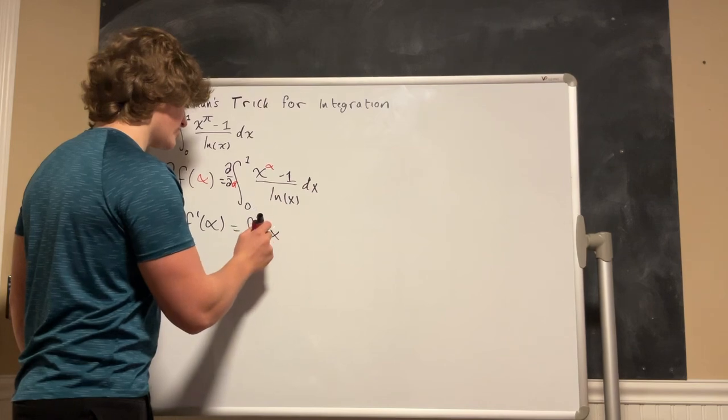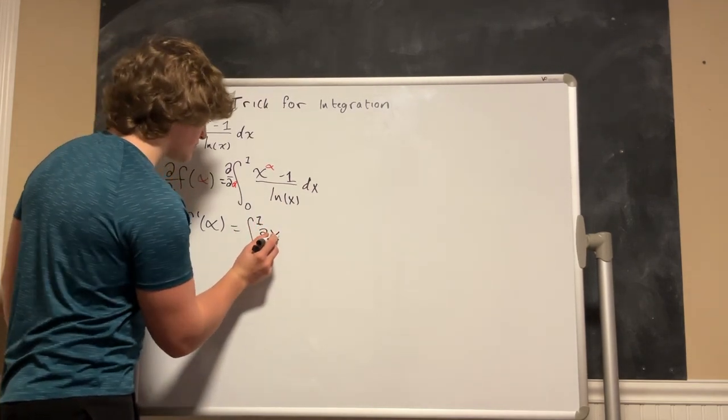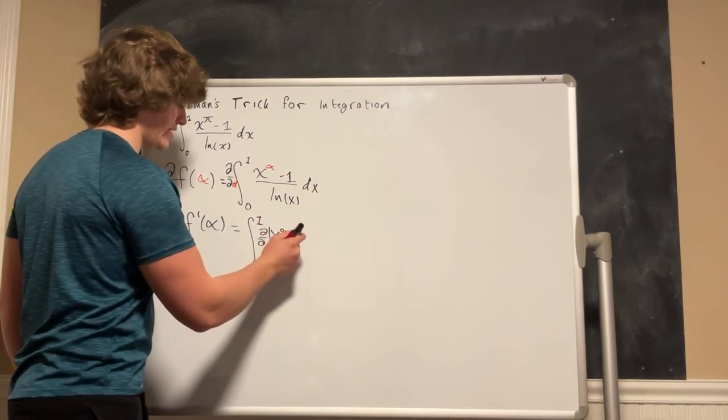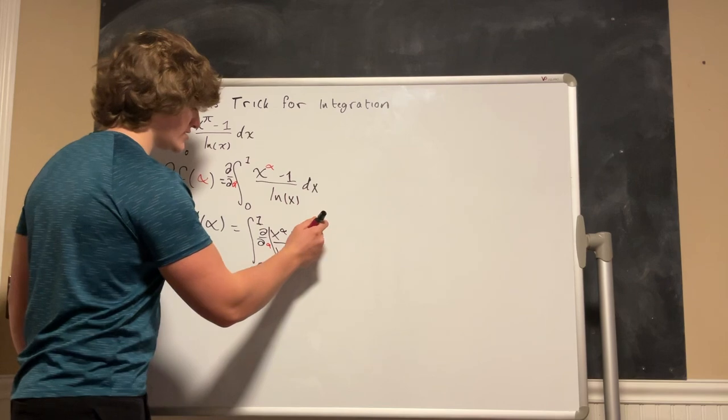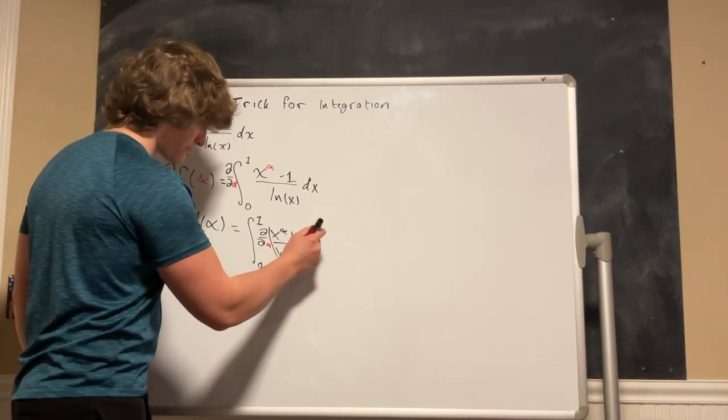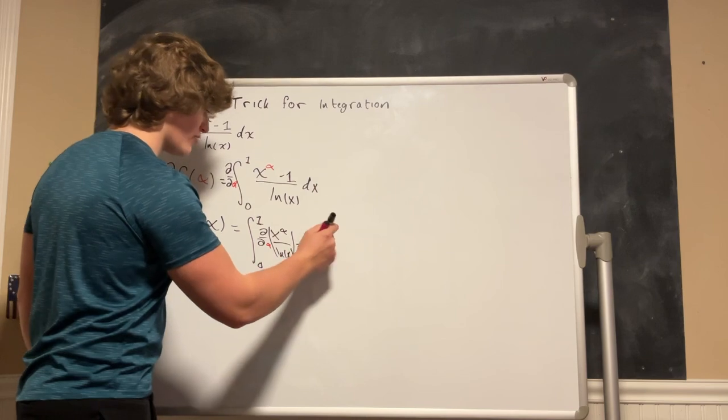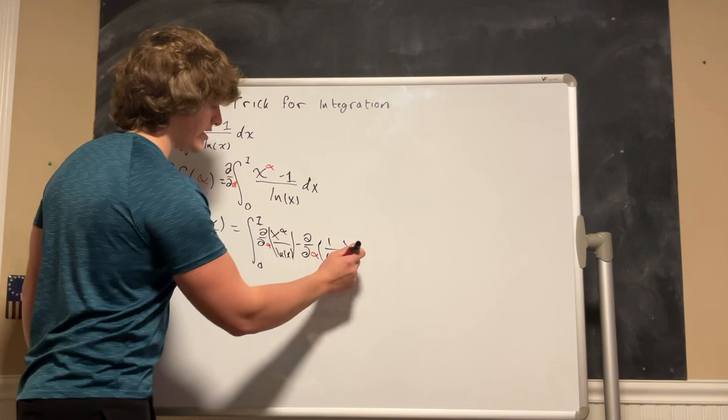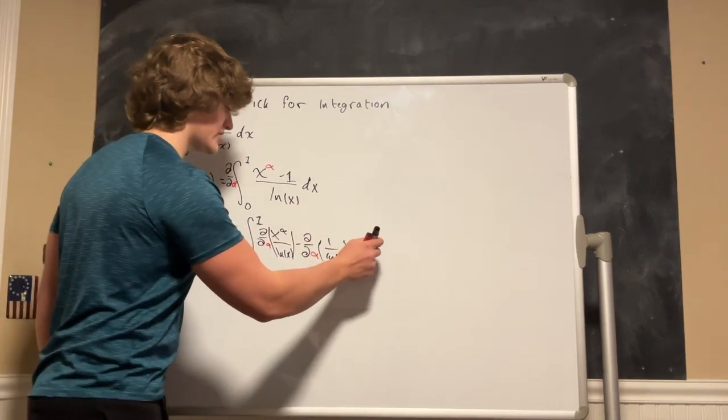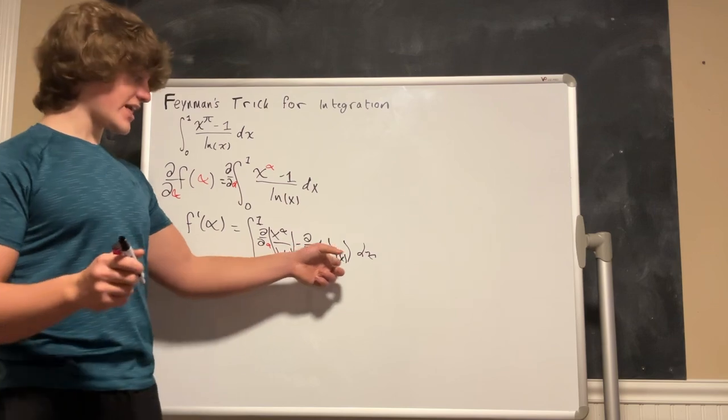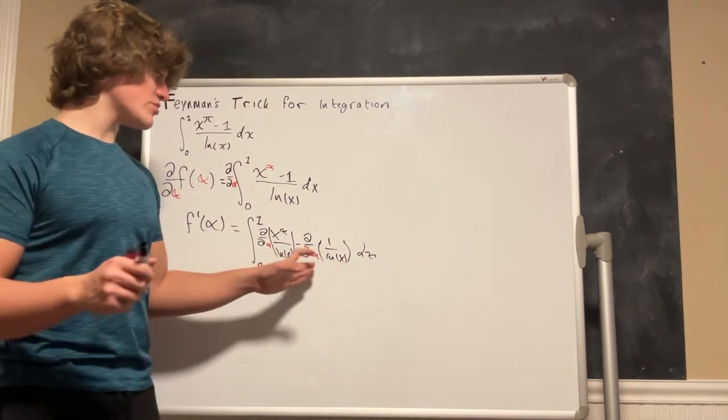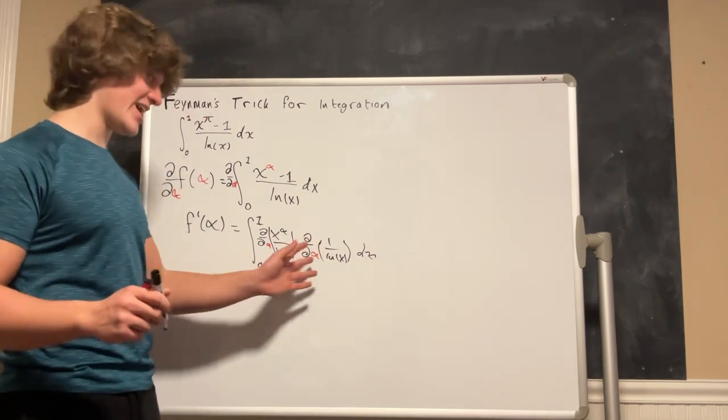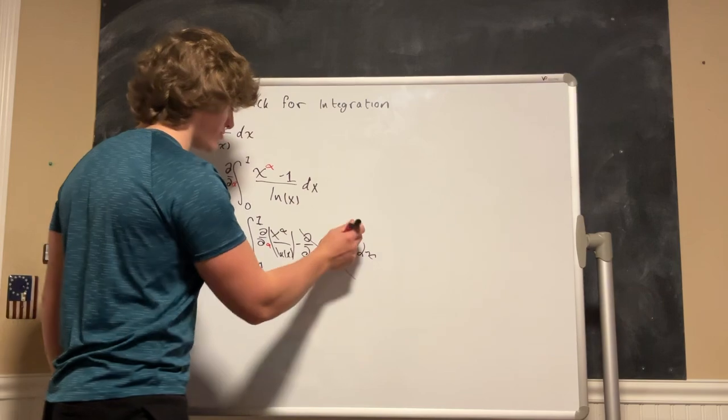This is the partial derivative with respect to alpha of x to the alpha divided by ln of x minus the partial derivative with respect to alpha of 1 divided by ln of x. This term right here, there's no alpha in this term. So with respect to alpha this is like saying the derivative of 5 or something with respect to x. So this is just going to become 0 so this goes away.